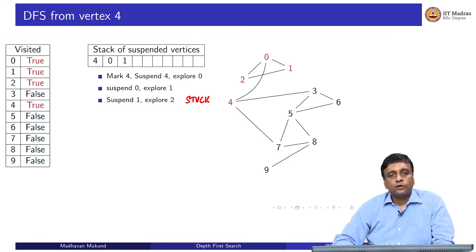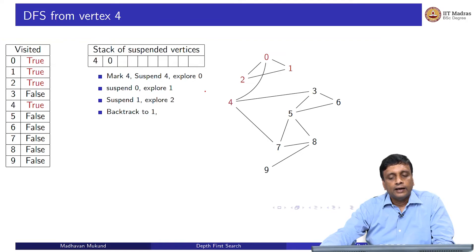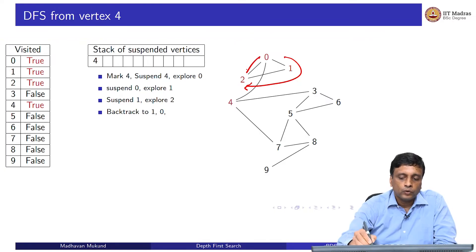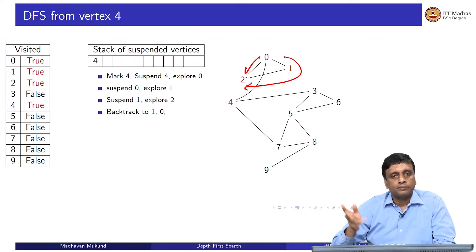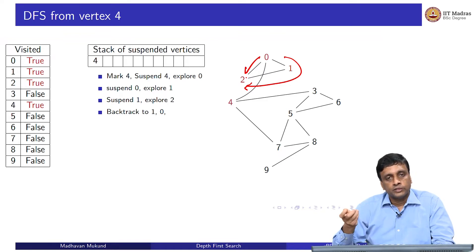Since we are stuck at 2, we backtrack to 1 and ask whether there is anything pending there. Vertex 1 had only two neighbors, 0 and 2: 0 was marked at the beginning and 2 was just marked, so 1 is also a dead end. We backtrack to 0. When we went from 0 to 1, vertex 2 was unexplored, but we reached 2 via a roundabout route. So by the time 0 looks at 2 directly, 2 is already visited — unlike BFS where 2 would only be visited from 0. So 0 cannot visit 2, and we backtrack to 4.